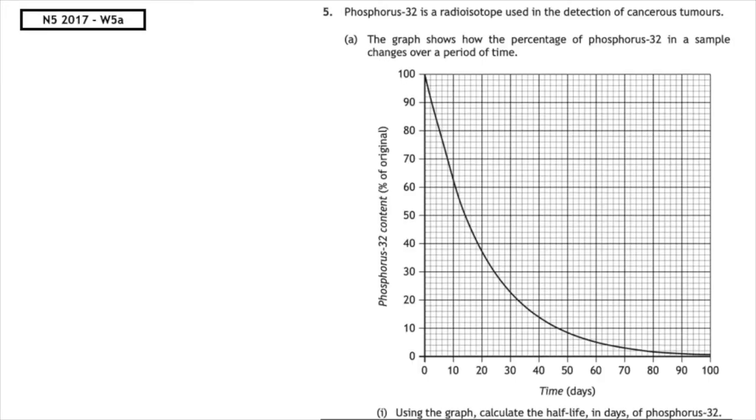This past paper question is from the National 5, 2017, written 5a. Phosphorus-32 is a radioisotope used in the detection of cancerous tumours. The graph shows how the percentage of phosphorus-32 in a sample changes over a period of time. Using the graph, calculate the half-life in days of phosphorus-32.